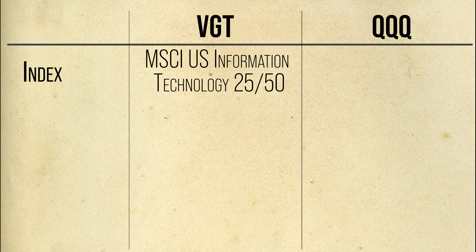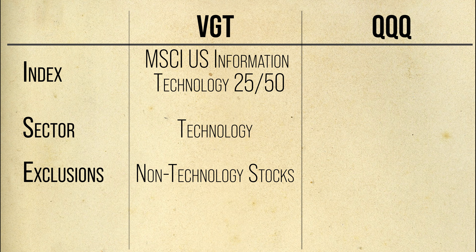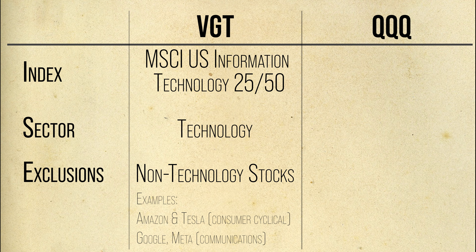Let's start with the indices that VGT and QQQ track, since this is where performance differences — either past or future — originate. VGT tracks the performance of US companies in the technology sector, and for this reason VGT excludes any firm outside of the officially defined tech sector. For instance, you will not find Amazon (consumer cyclical), Google (communication), Meta (communication), or Tesla (consumer cyclical) in VGT's portfolio.